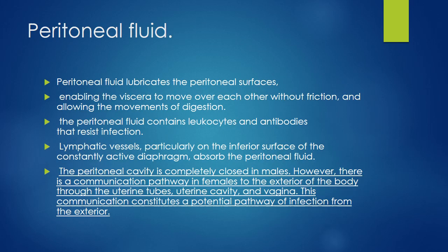The peritoneal cavity contains only a thin film of peritoneal fluid. This peritoneal fluid lubricates the peritoneal surfaces so the viscera can move over each other without friction, allowing the movements required for digestion. Peritoneal fluid also contains leukocytes and antibodies that resist infection. The lymphatic vessels present particularly on the inferior surface of the diaphragm absorb the peritoneal fluid. Please notice that the peritoneal cavity is completely closed in males, but in females there is communication to the exterior — uterine tubes have openings and through these openings this communication constitutes a potential pathway of infection from the exterior.